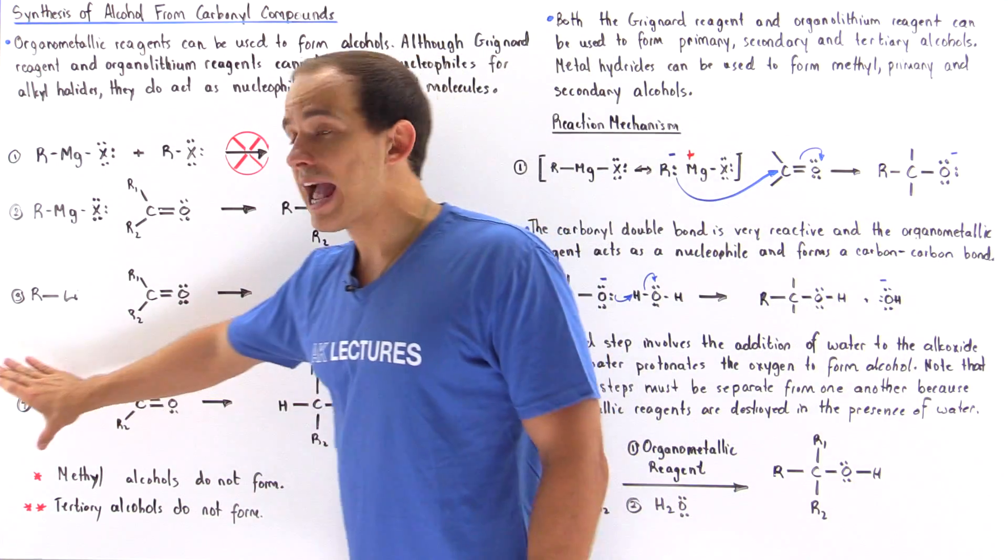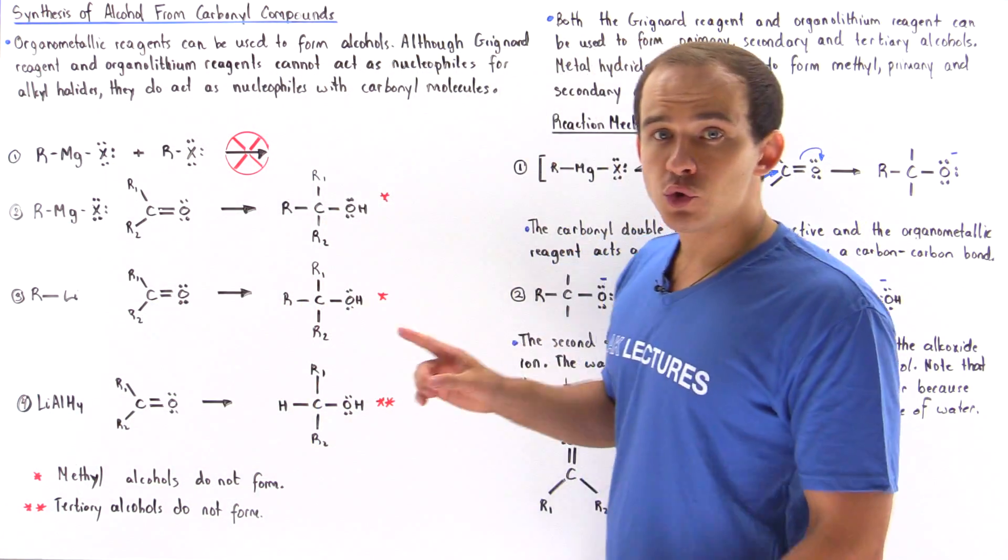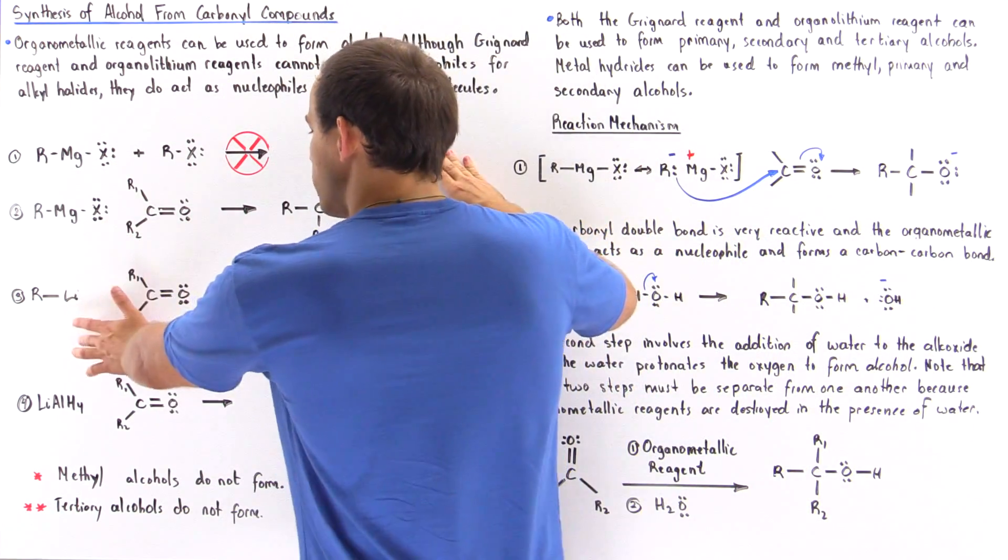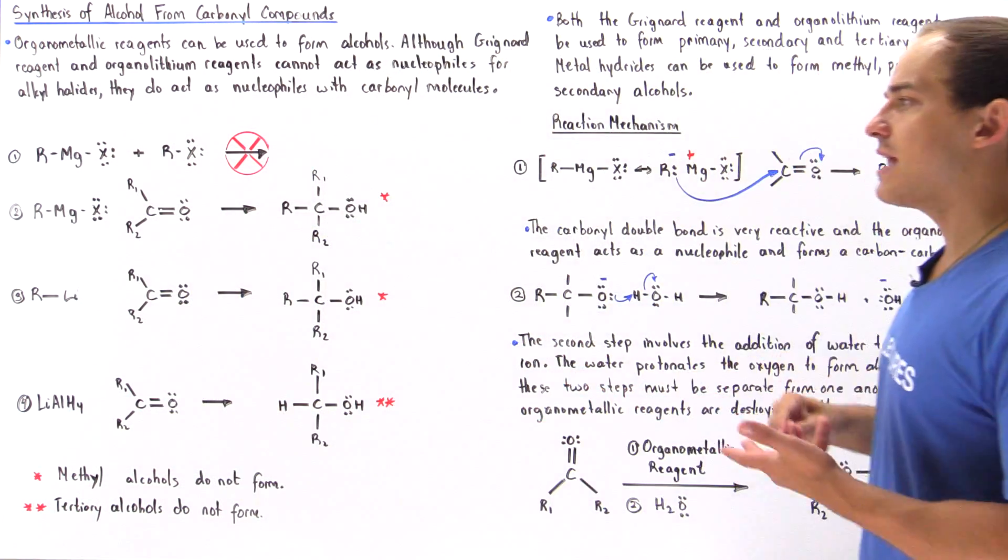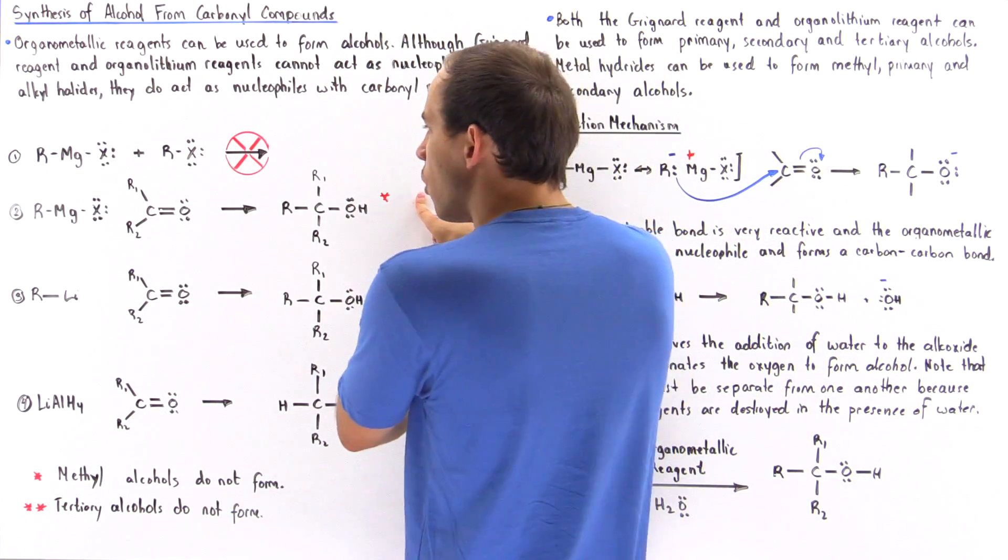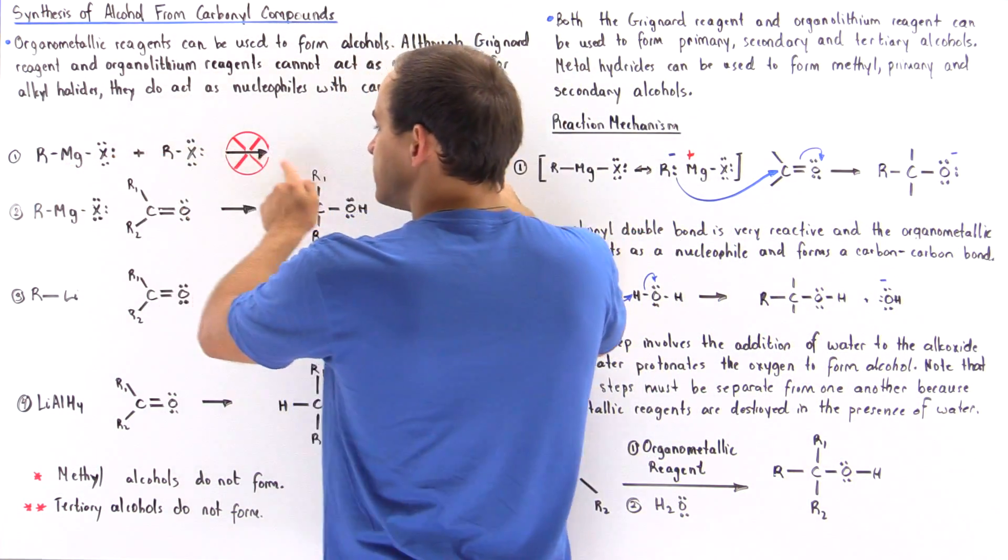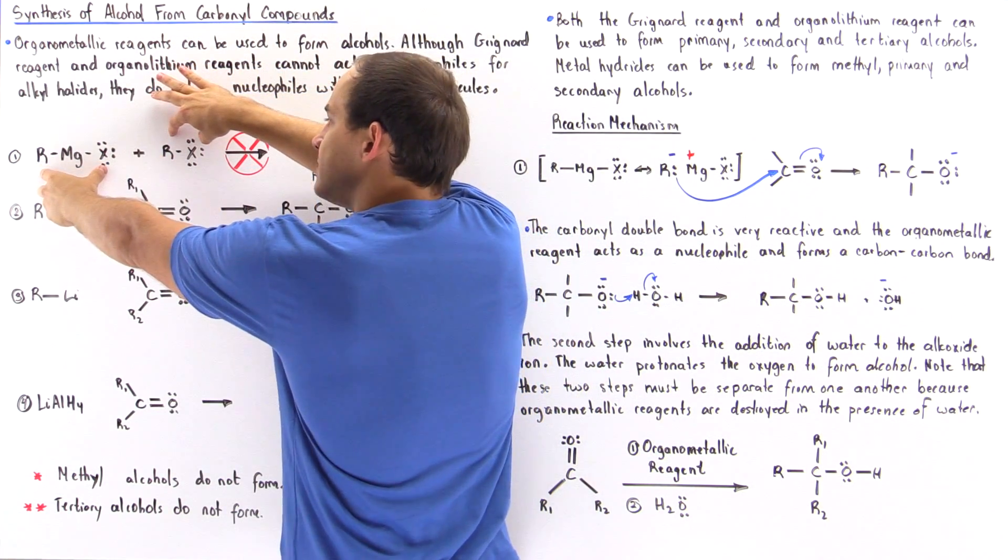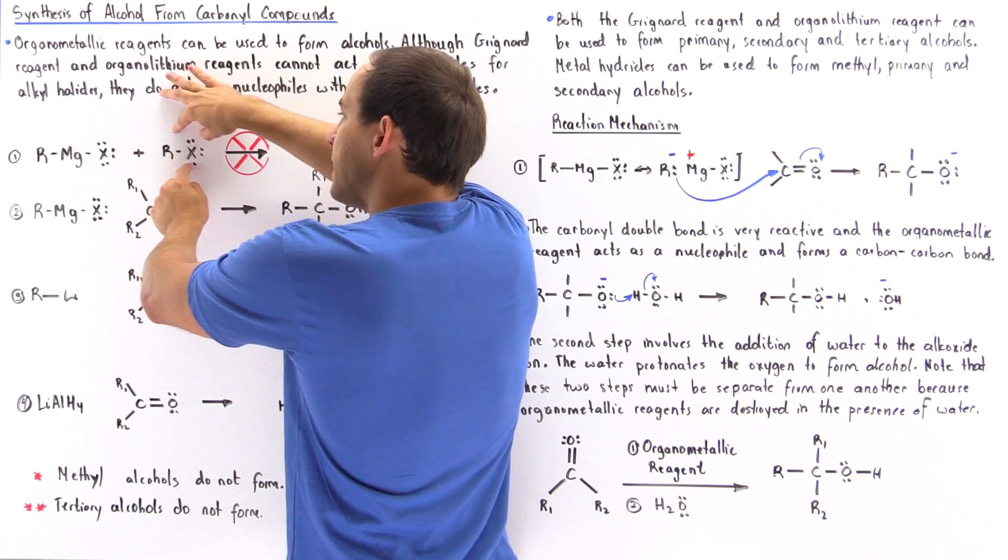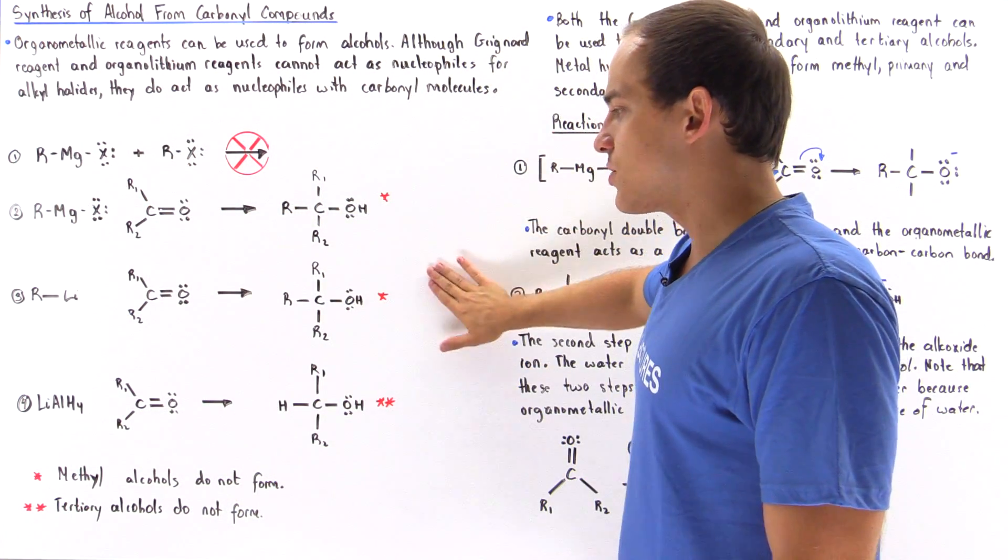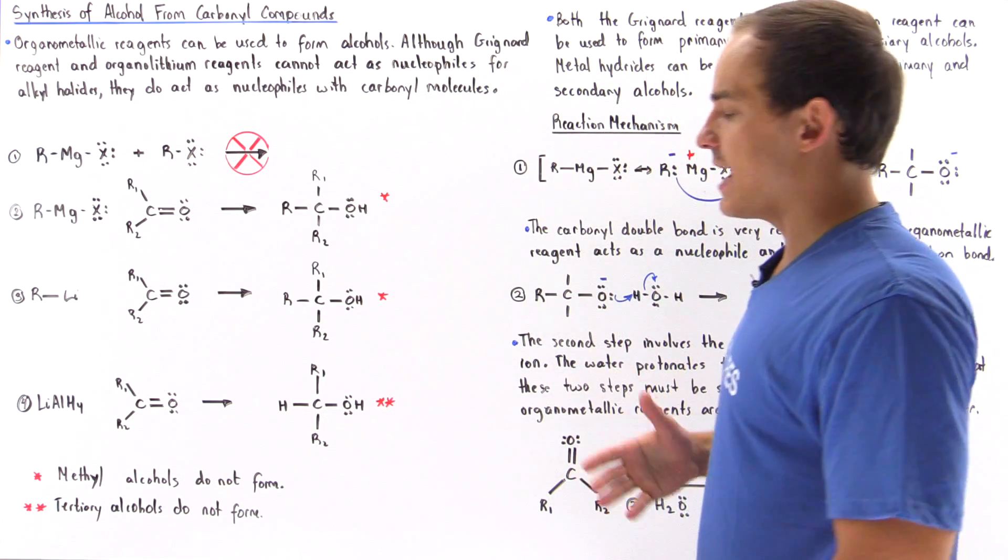So in this reaction, in reaction 4, we only produce methyl, primary, and secondary. In reactions 2 and 3, we produce primary, secondary, and tertiary, and we never produce methyl alcohols. And this reaction doesn't take place because this bond isn't very reactive and this nucleophile is not very strong to displace this leaving group. So only reactions 2, 3, and 4 can actually take place.